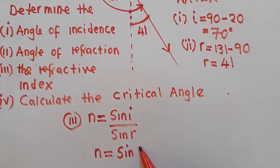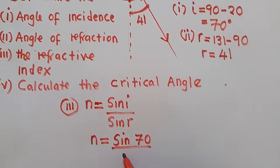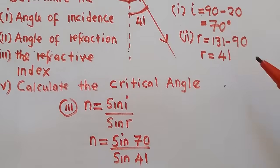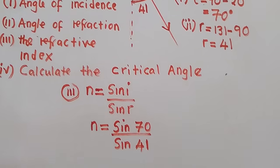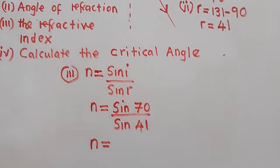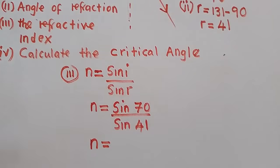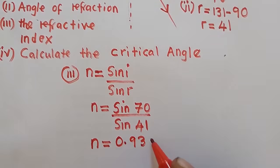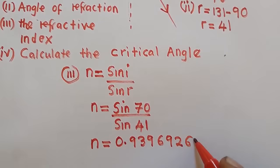The angle of incidence is 70 degrees and the angle of refraction is 41 degrees. So we substitute: n equals sin 70 over sin 41. Sin 70 equals 0.93969262, and sin 41 equals 0.65605903.